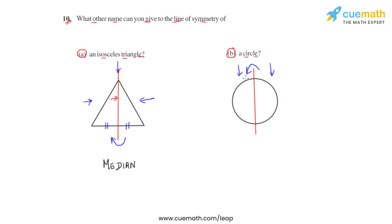So this is a line of symmetry, and since it divides the circle into two equal halves, it must pass through the center of the circle. If this black point is the center, and the line of symmetry passes through it touching the circle on both ends, we can say that this line also acts as the diameter of the circle.